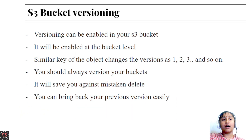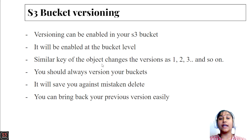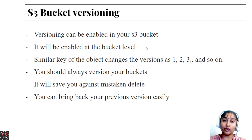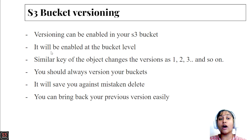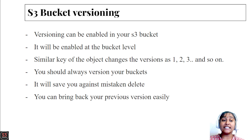Let's take a short introduction about bucket versioning. Versioning can be enabled in our S3 bucket through the AWS console — we can enable and disable the versioning of a particular bucket. Bucket versioning is enabled at the bucket level only, so you have to go to every bucket and enable versioning for each bucket you have created.